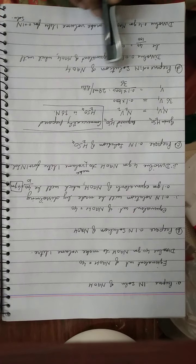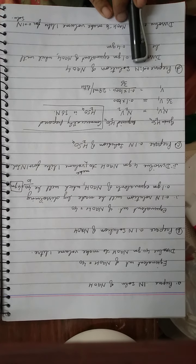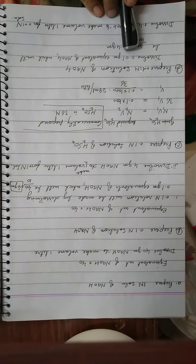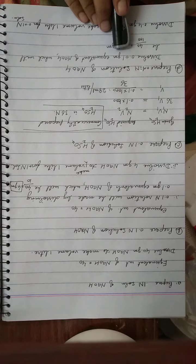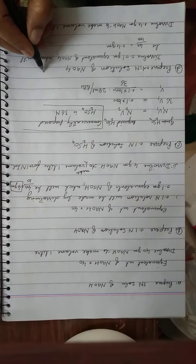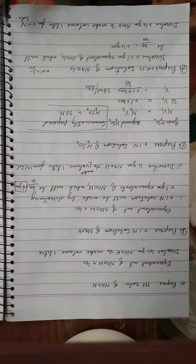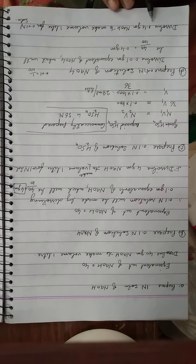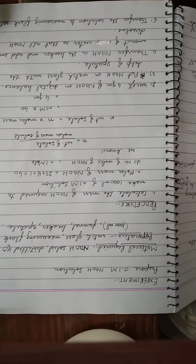Prepare 0.01 N solution of sulfuric acid. We will take 0.01 gram equivalents of sodium hydroxide. Since 0.01 equals 1/100, we divide 40 by 100 to get 0.4 grams. Dissolve 0.4 grams of sodium hydroxide and make the volume up to 1 liter for a 0.01 N solution. This covers all about normality and normal solutions.